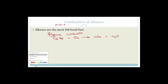Now balance the oxygen: 3 CO2 gives 6 oxygens; 4 H2O gives 4 oxygens — that's 10 oxygens total. So multiply O2 by 5, giving 5×2=10. The balanced equation is: C3H8 + 5O2 → 3CO2 + 4H2O. Now let's try butane: C4H10 + O2 → CO2 + H2O. Four carbons → 4CO2; ten hydrogens → 5H2O. Oxygens: 4×2=8 plus 5×1=5 equals 13 — but you can't have 6.5 O2!